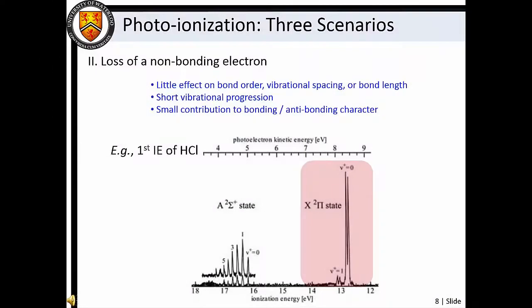Loss of a non-bonding electron, on the other hand, has very little impact on the overall bonding character. We find that the bond length and dissociation energy of the ion are relatively unchanged compared to the neutral if a non-bonding electron is removed. As a result, only a relatively short vibrational progression is observed in the photoelectron spectrum.